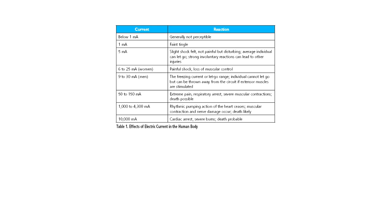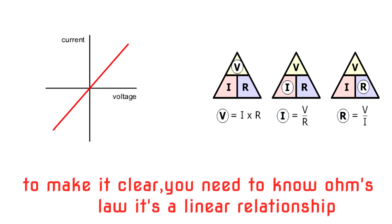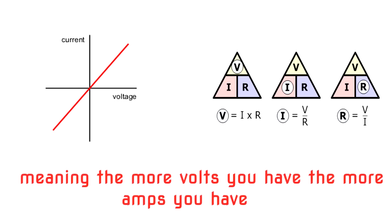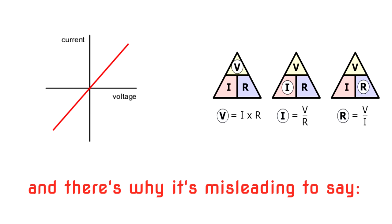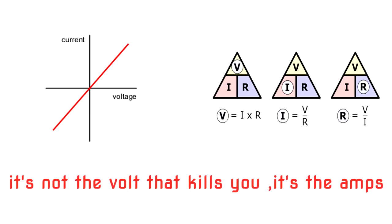Here's some of the standard safety guide about the amps, showing you how few milliamps could damage your body. To make it clear, you need to know Ohm's law. It's a linear relationship, meaning the more volts you have, the more amps you have. And that is why it's misleading to say it's not the volts that kill you, but the amps.